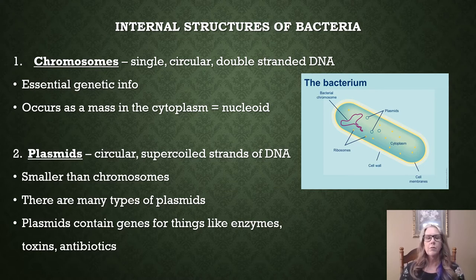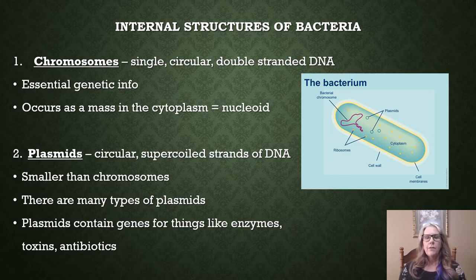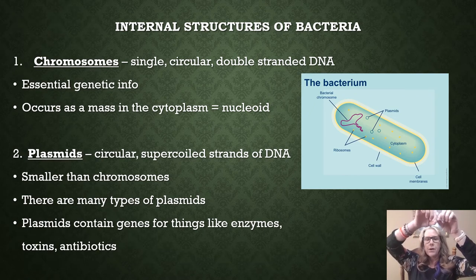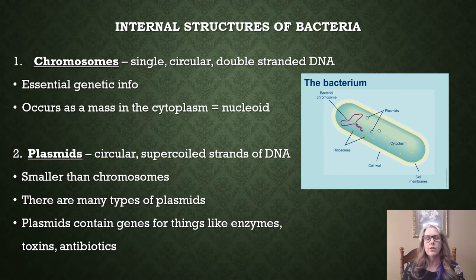Getting started with number one: chromosomes. Bacterial chromosomes — how to describe what this structure is? It's a single, circular, double-stranded DNA molecule. So if you can imagine holding a double-stranded structure that was circular — think of holding a string and then dropping it onto a desk. That is what represents the bacterial chromosome.